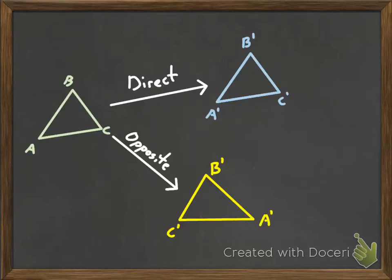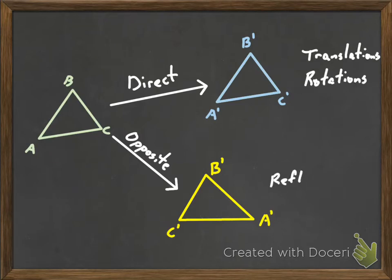Alright students, I just wanted to make a quick video on composite transformations. But before we do that, I just wanted to talk a little bit about direct and opposite isometries, because if we can identify whether it's a direct or an opposite isometry, it'll really help us in recognizing what type of transformation it is, whether it's a composite transformation or just a single transformation.